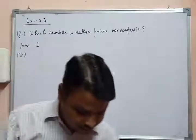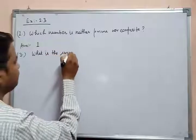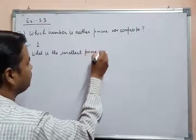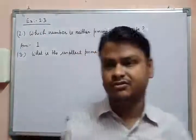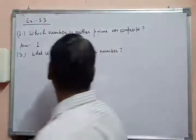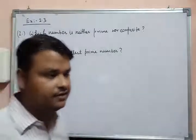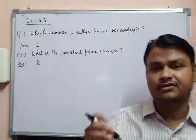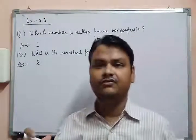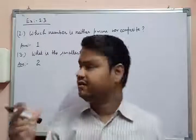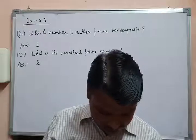Now moving to question number three: what is the smallest prime number? I have already given the answer in the notes — two is the smallest prime number. Two is the smallest prime number, and also two is the only even prime number; all the rest of the prime numbers are odd.